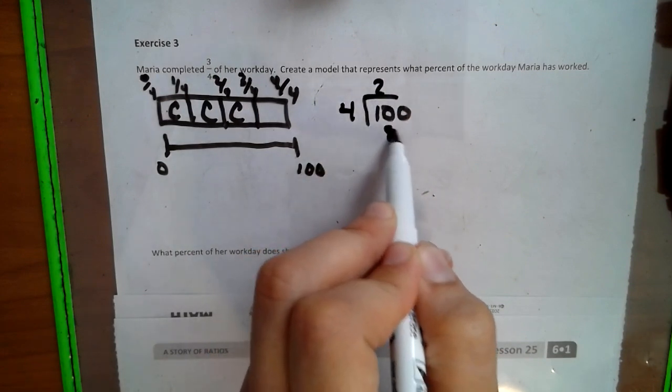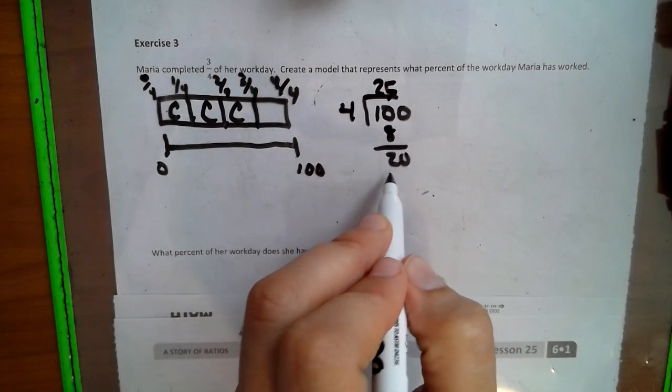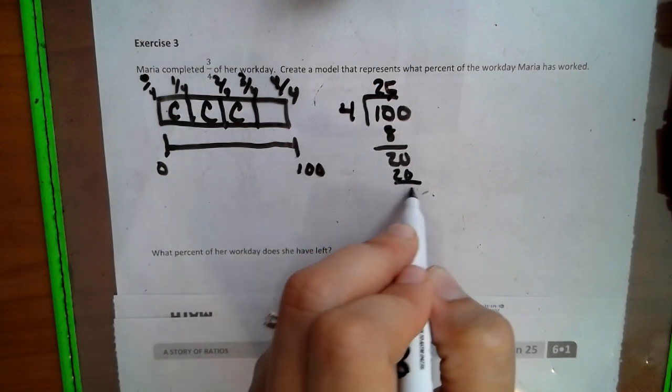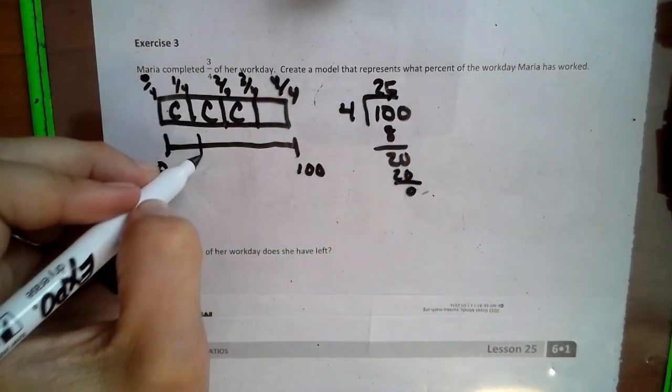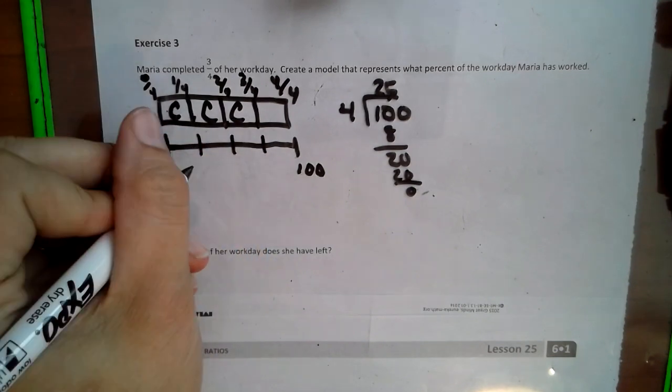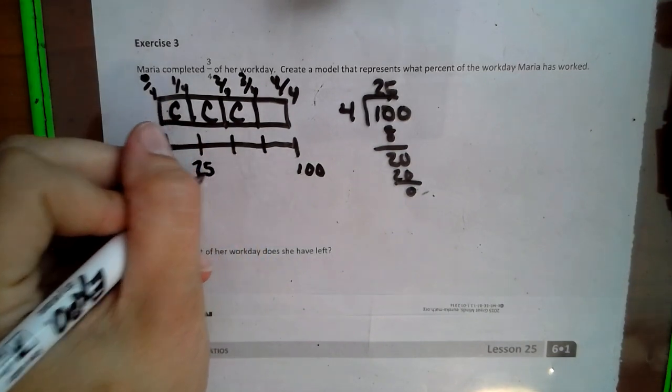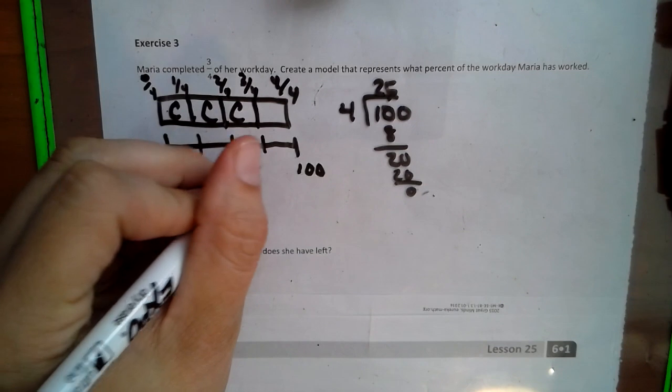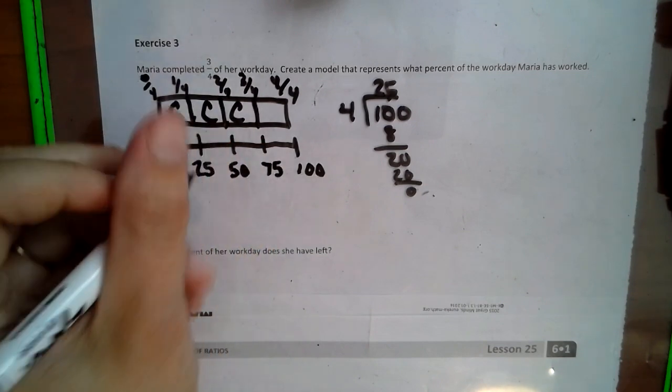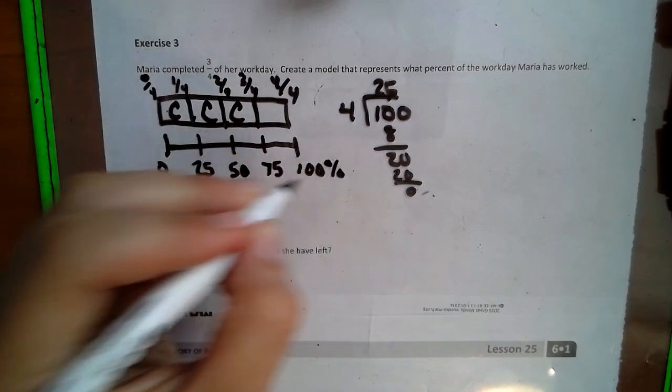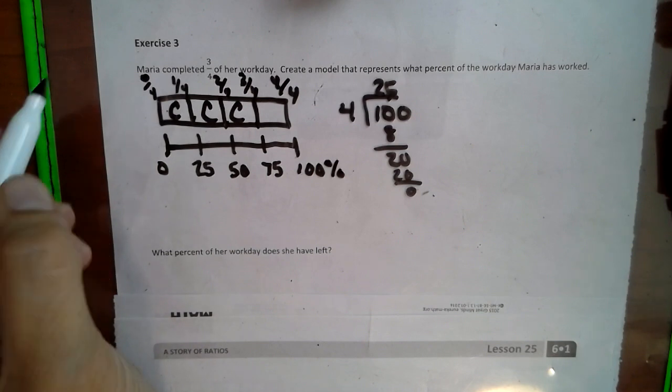And we can find out that each bar here represents 25%. So 25%, 50%, 75%, 100%. So it says what percent of her workday is completed?